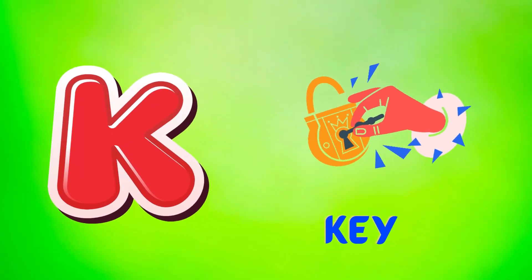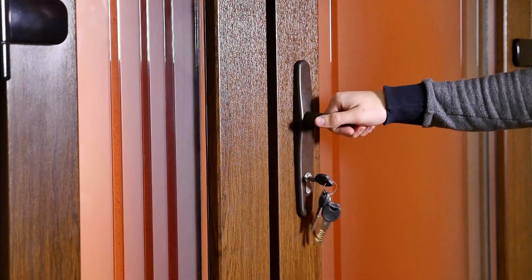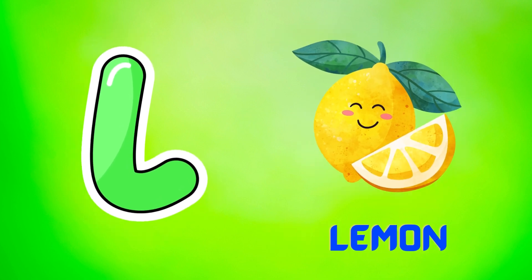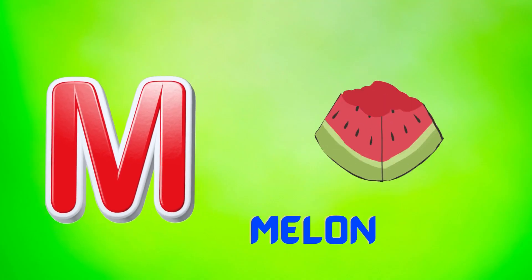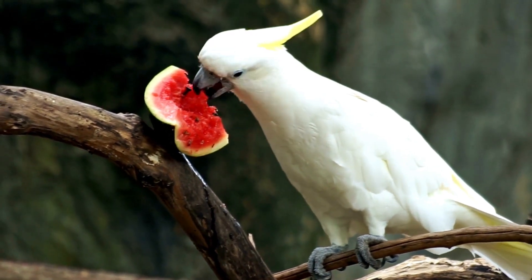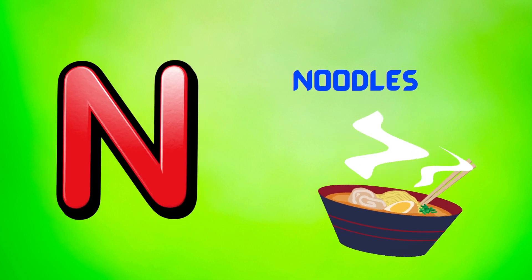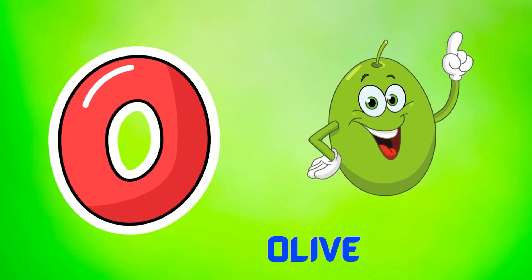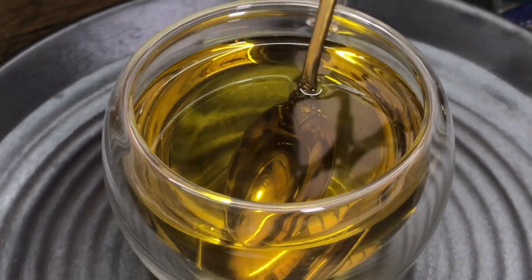K is for key. Key, key. L is for lemon. Lemon, lemon. M is for melon. Melon, melon. N is for noodles. Noodles, noodles. O is for olive. Olive, olive.